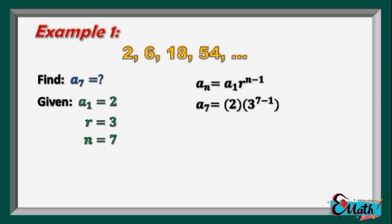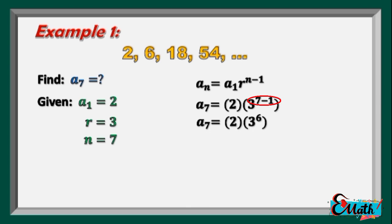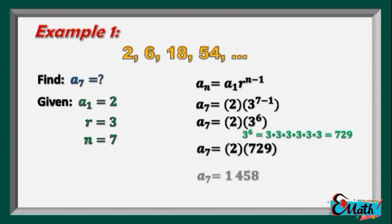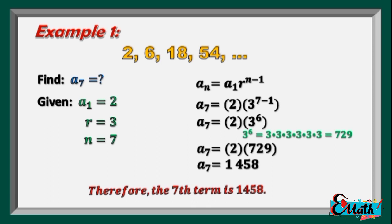So, if we are going to find the 7th term, just simply substitute the given values to the formula a sub n equals a sub 1 times r to the power of n minus 1. So, a sub 7 is equal to 2 times 3 to the power of 7 minus 1. Then, simplify the exponent. So, a sub 7 equals 2 times 3 to the power of 6. Since 3 to the power of 6 equals 729, then a sub 7 equals 2 times 729, which is equal to 1,458. Therefore, the 7th term is 1,458.